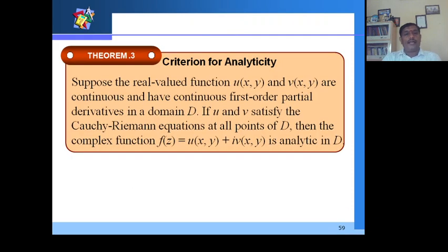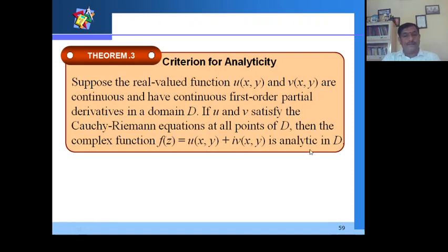It starts with a criterion for analyticity. Suppose the real-valued functions u(x,y) and v(x,y) are continuous and have continuous first-order partial derivatives in a domain D. If u and v satisfy the Cauchy-Riemann equations at all points of D, then the complex function f(z) = u + iv is analytic in the domain D.